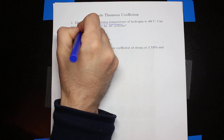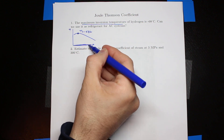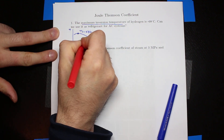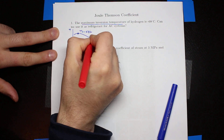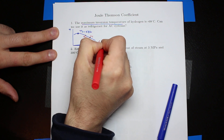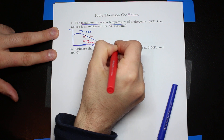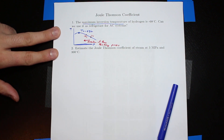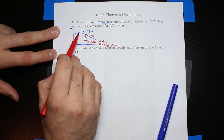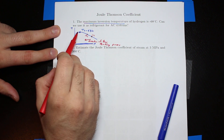During throttling we are always decreasing the pressure, so we go from right to left on the T-P diagram. If we start from point one, during throttling we go to point two. If we are on the right side of these curves, the temperature is increasing during the throttling process.